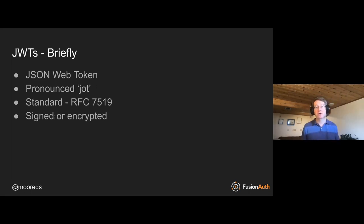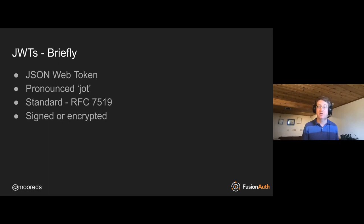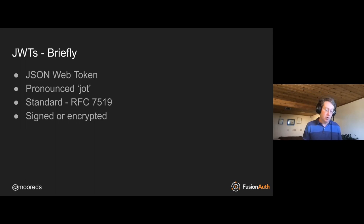JSON Web Tokens can be signed or encrypted, and this is a really important point. Signed JSON Web Tokens are by far more common. With a signed JSON Web Token, the payload is not hidden — anyone who gets a hold of one can view the payload; it's just base64 URL encoded JSON. Encrypted JSON Web Tokens, in contrast, actually encrypt the payload so you need the key to see it. I'm going to focus mostly on signed JWTs since they're more common, but note two things: encrypted JWTs are an option, and if you use a signed JWT you want to be careful where you store it and what you put in the payload.